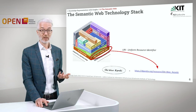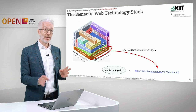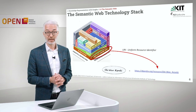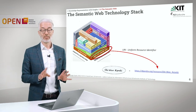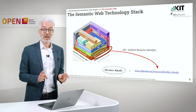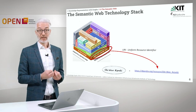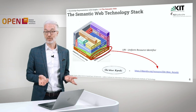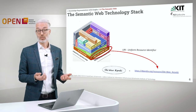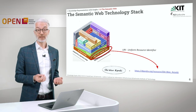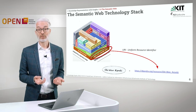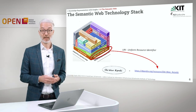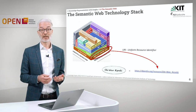Let's start at the very bottom in our quick tour through the semantic web technology stack. We are here at the so-called web platform level. The things we are talking about in the semantic web have to be addressable — they need a unique identifier. What we are using here is simply reusing what exists already on the web: the Uniform Resource Identifier, or in its internationalized form, the Internationalized Resource Identifier — URI or IRI.